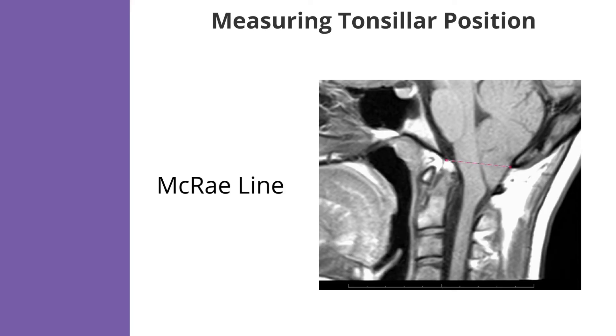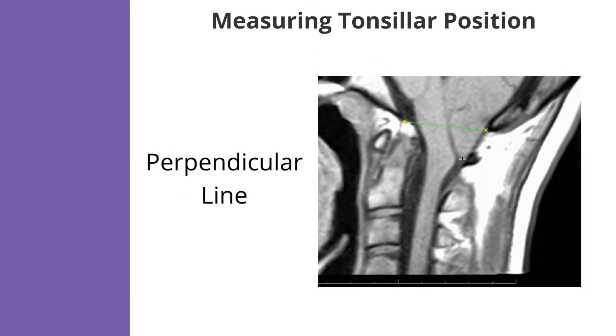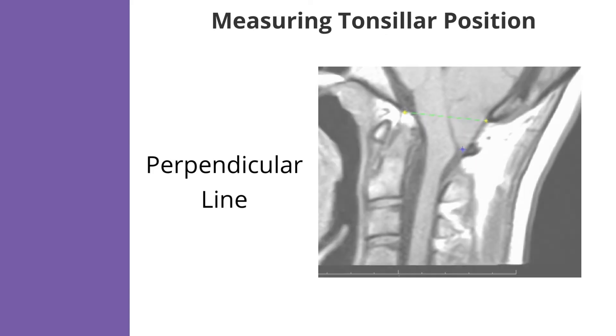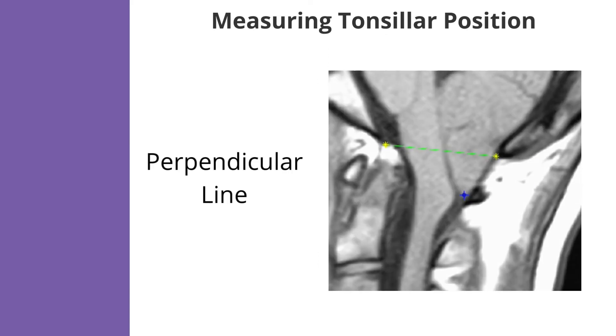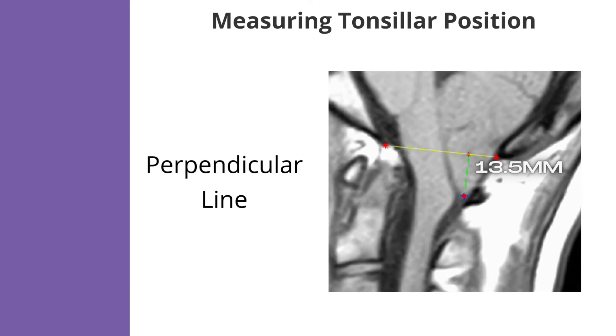This is known as the McCray line. Finally, another line is drawn perpendicular to this one, down to the tip of the cerebellar tonsil. The length of this line, in millimeters, represents the tonsillar position.